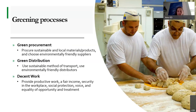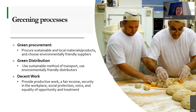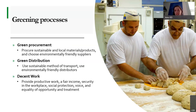Also think about green procurement — where you're buying your products and sourcing your materials can make a huge difference. Look at local materials and products and choose environmentally friendly suppliers. For green distribution, whatever product or service you're offering, think about sustainable methods of transport. As Nathan flagged, much of a business's environmental impact can be in the transportation of products — some companies ensure all delivery is by bicycle, and in the case of Compost Cab, they use exclusively hybrid or electric vehicles for collecting compost. And decent work means providing a fair living wage, security in the workplace, social protection, opportunity to express opinions, and equality of opportunity and treatment.